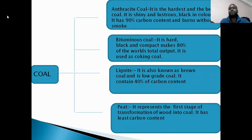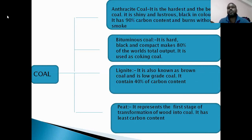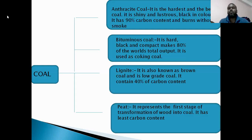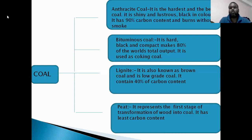Peat represents the first stage of transformation of wood into coal. It has the least carbon content. When decomposed wood decomposes over a longer period of time, after a certain period it converts into coal.